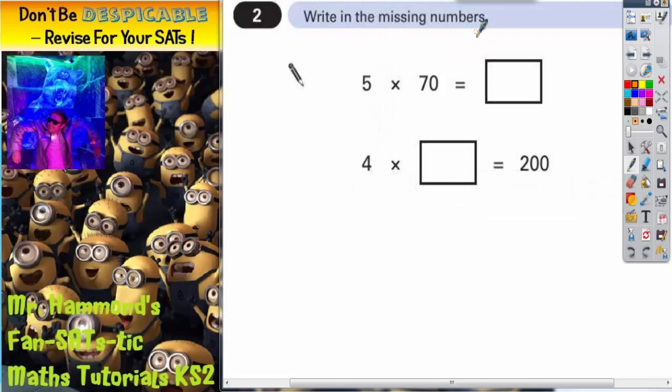Question 2, write in the missing numbers. The first thing you should notice is in the first question, the missing number is the answer to the question. Whereas in the second one, the missing number is part of the question. The answer is 200 and we already know that. So we'll have to bear that in mind in a moment.